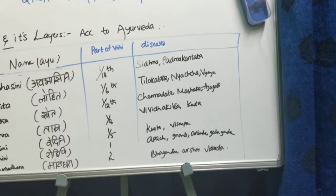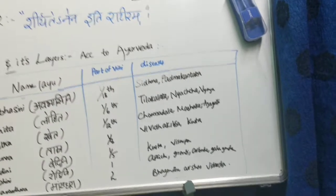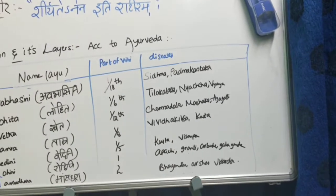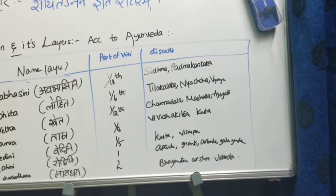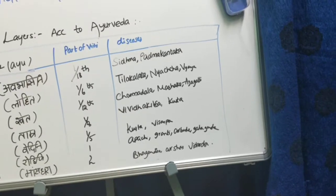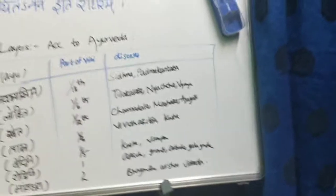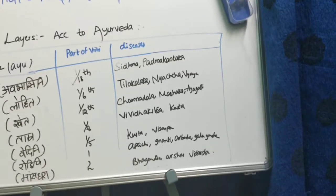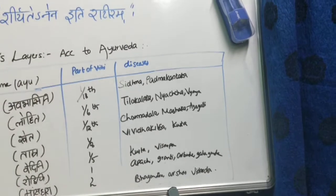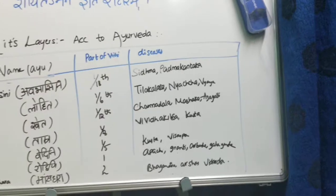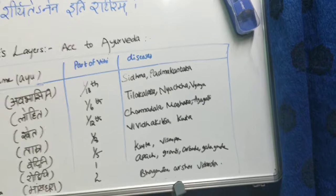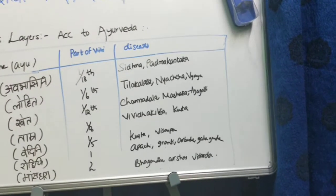Shweta is the third layer of skin and has a thickness of one-twelfth Rihi. If there is a defect in this layer, it causes Ajagalli, Chermadal, Mashak. Tamra is the fourth layer with one-eighth part of Rihi. A defect here causes Kilas and Kushtha.